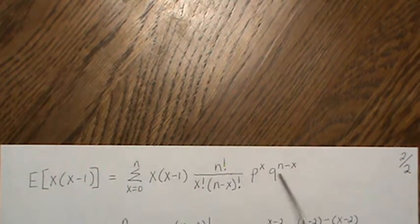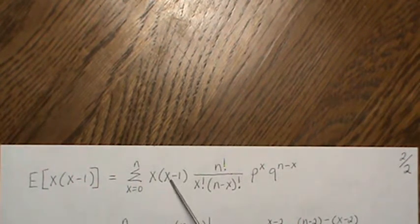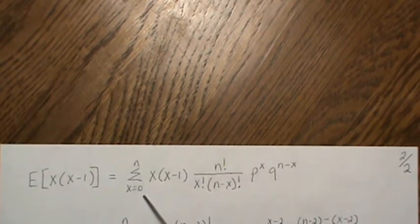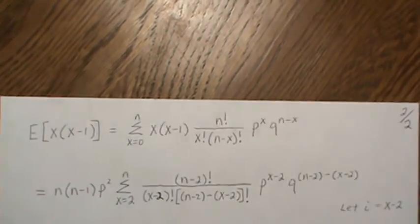And notice that when x is 0, that's 0, and when x is 1, this is 0, so really we can go from 2 to n. And that's what I do here.